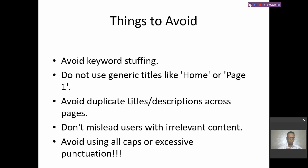Now the things to avoid. First: avoid keyword stuffing. Keyword stuffing is when you repeat the same keywords many times in the meta title, meta description, or on the page. For example, repeating 'case for iPhone 17' three or four times in the meta title — Google considers this spam. Use just one or maximum two keywords, or try to use synonyms instead, which is not considered keyword stuffing.